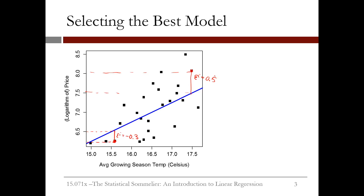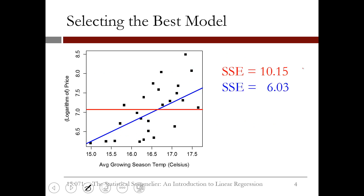One measure of the quality of a regression line is the sum of squared errors, or SSE — the sum of the squared residuals. Let n equal the number of data points. Then SSE equals the squared error on the first data point plus the squared error on the second, up through the nth data point. We can compute SSE for both the red and blue lines; as expected, the blue line has a smaller SSE. The line giving the minimum SSE is shown in green — this is the line our regression model will find.